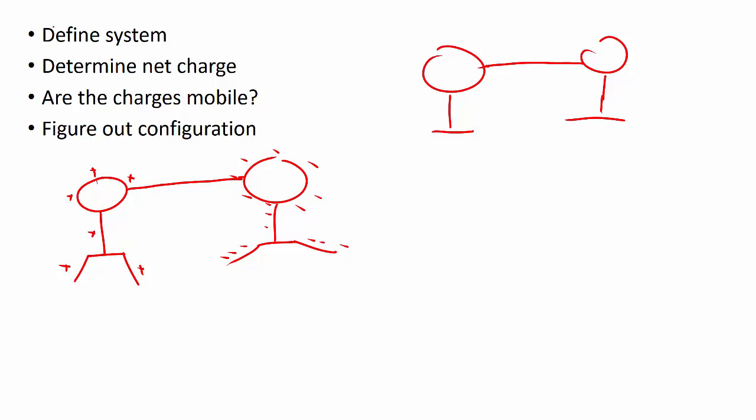Alright, so, the system here is pretty clearly both of the electroscopes together. Because we are trying to figure out what happens to both of them. The net charge of the whole system is minus 10. Because we have plus 6 on the left electroscope. And we have minus 16 on the right. So, overall this thing is minus 10. 10 more excess negatives than positives. Are the charges mobile? Yes, they are. So, the head of the electroscope and the stand leaves all of its metal. So, it is all conducting. So, the charges can move around everywhere.